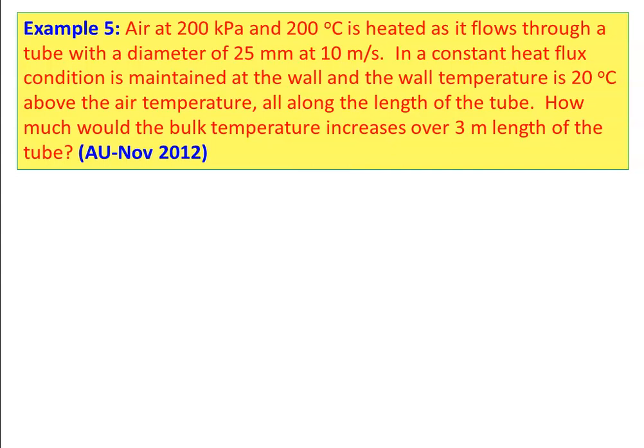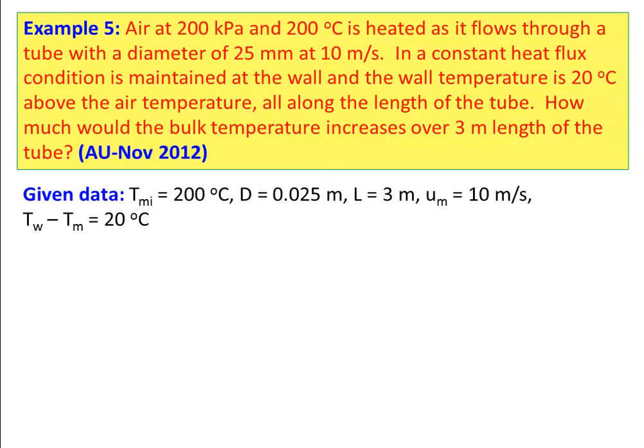Example 5 (university question paper, November 2012): Air at 200 kPa and 200°C is heated as it flows through a 25 mm diameter tube at 10 m/s under constant heat flux condition. The wall temperature is 20°C above the air temperature along the entire length. How much does the bulk temperature increase over 3 m? Given: Tw − Tm = 20°C, diameter = 0.025 m, length = 3 m, velocity = 10 m/s.